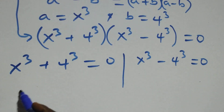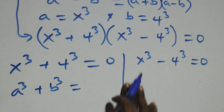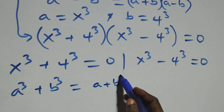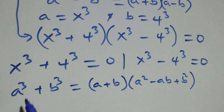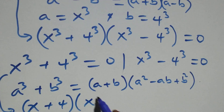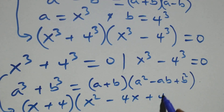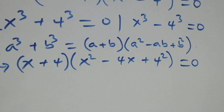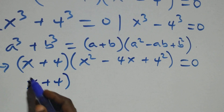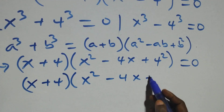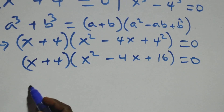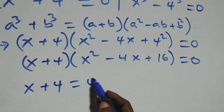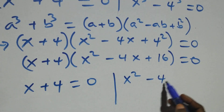Starting from the first case, this follows from a cubed plus b cubed, which is the same thing as (a + b)(a² - ab + b²). So this becomes (x + 4)(x² - 4x + 4²) = 0, that is, (x + 4)(x² - 4x + 16) = 0.